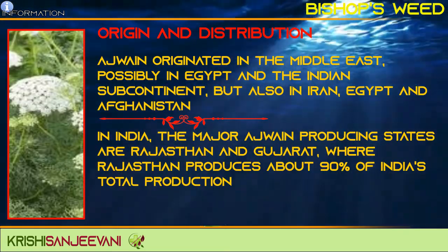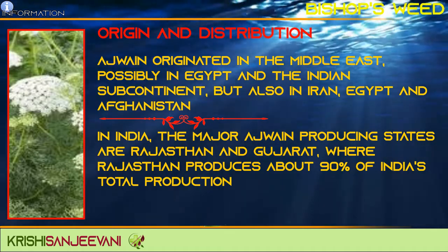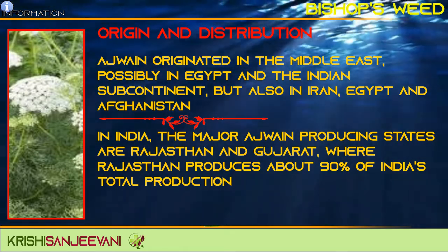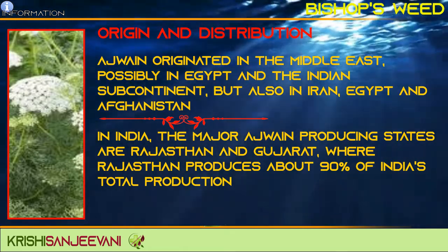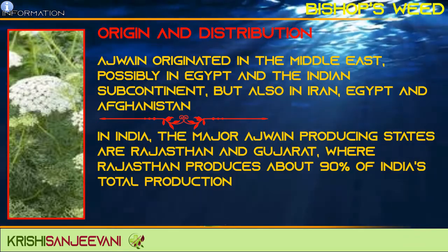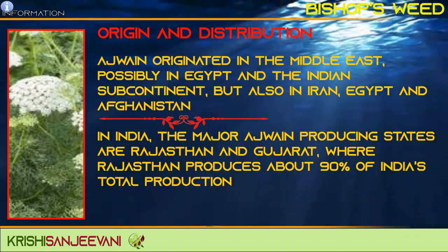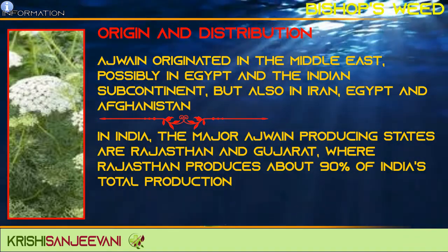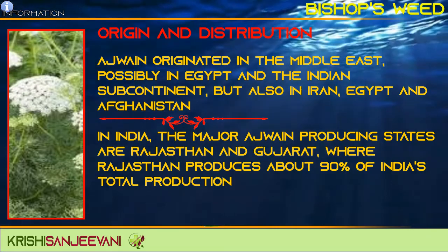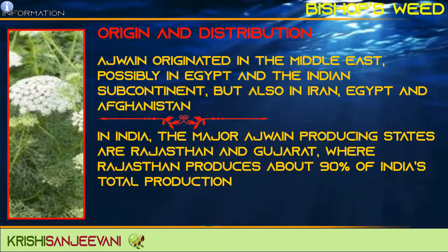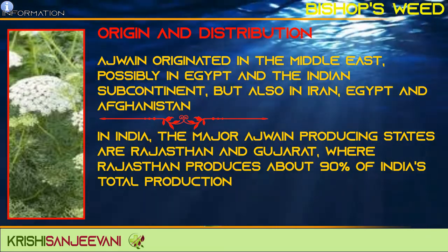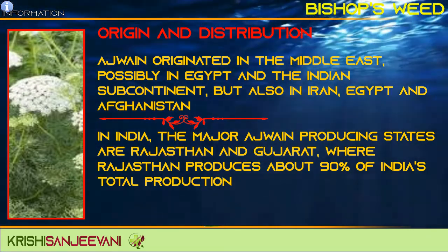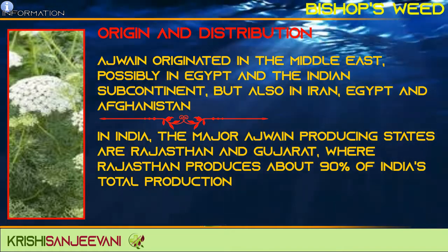Ajwain originated in the Middle East, possibly in Egypt and the Indian subcontinent, but also in Iran, Egypt, and Afghanistan. In India, the major Ajwain-producing states are Rajasthan and Gujarat, where Rajasthan produces about 90% of India's total production.